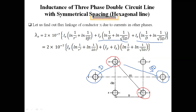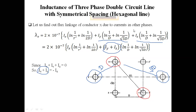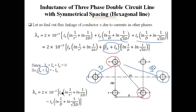For a balanced three-phase system, ix + iy + iz = 0, so iy + iz = −ix. Substituting −ix in place of (iy + iz) in the previous equation, we get −ix·[ln(1/d) + ln(1/root(3)d)].